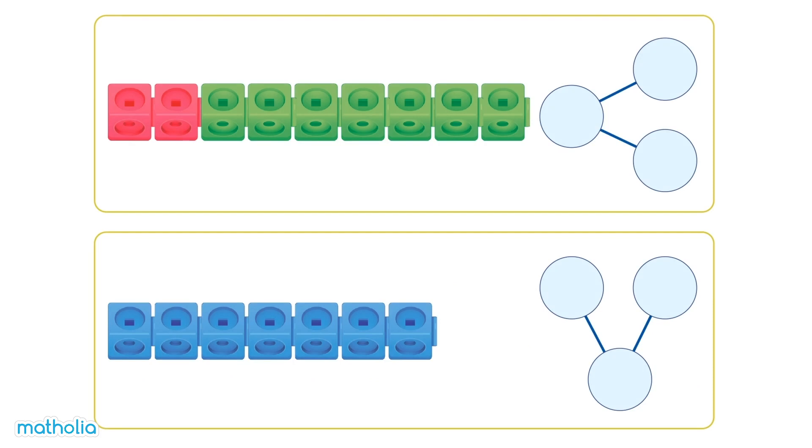This length of cubes has two parts. One part has two pink cubes. The other part has seven green cubes. The two parts make a whole. Two and seven make nine. There are nine cubes in all.